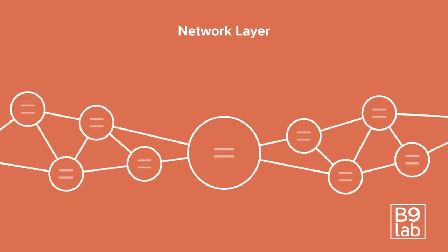Now let's look at the network layer. The network consists of many nodes. In most blockchain networks, all nodes are equal. Every node can keep a full copy of all the blocks.